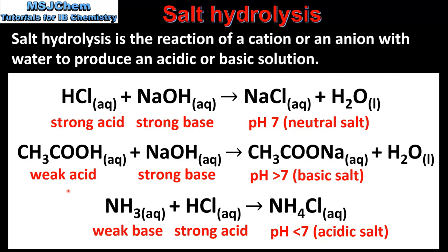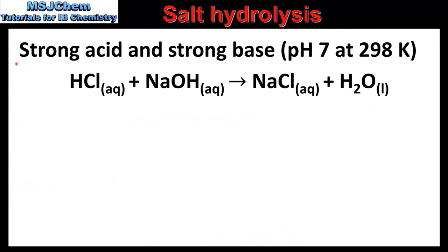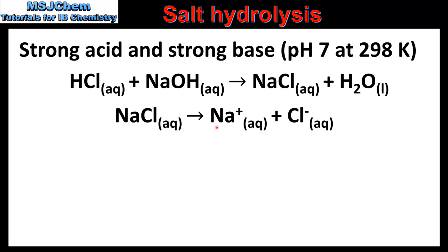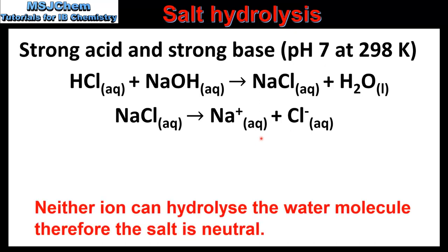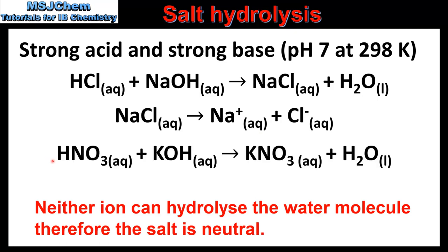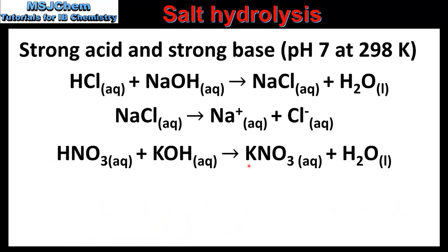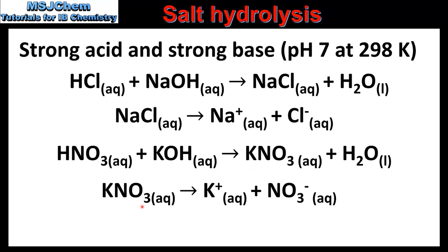Next we will look at each of these reactions in more detail. Starting with the reaction between a strong acid and a strong base: hydrochloric acid reacts with sodium hydroxide to produce sodium chloride and water. The sodium chloride dissociates to form sodium ions and chloride ions. Due to the fact that strong acids and bases dissociate completely, neither ion is able to hydrolyse water, therefore the solution formed will have a pH of 7 at 298K. Another example is the reaction between nitric acid and potassium hydroxide, which form potassium nitrate. Neither ion is able to hydrolyse water, so the solution has a pH of 7 at 298K. To summarize, the salt formed by the reaction of a strong acid and a strong base is a neutral salt.